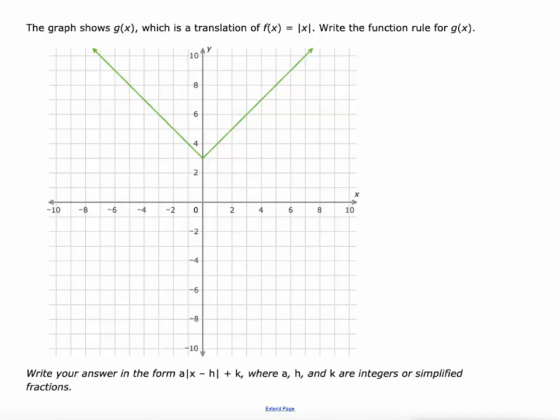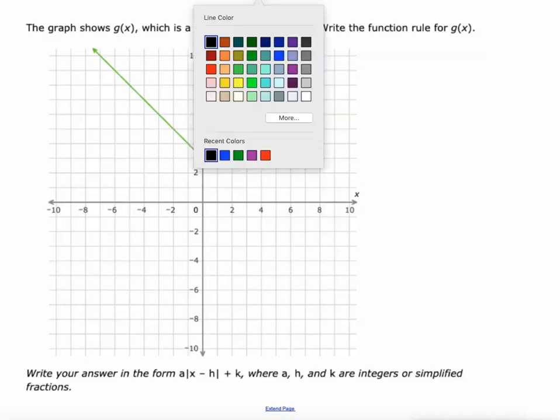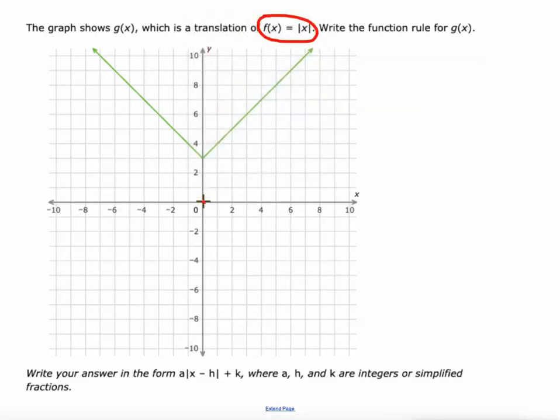This graph shows g(x), which is a translation of f(x) equals the absolute value of x. Write a function rule for g(x). f(x) is what we call the parent function, the most basic absolute value function. It looks like this. So how did this red one turn into this green one? It's quite easy, it's just been translated three units up.